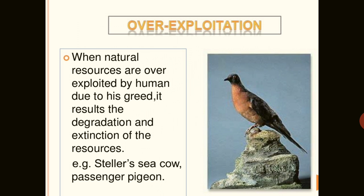The second reason is over-exploitation. Our natural resources are over-exploited by human activity driven by greed, resulting in the degradation and extinction of resources. Examples include Steller's sea cow, found in Russia, and the passenger pigeon — a very important bird that used to pass messages from one place to another — which was lost due to over-exploitation of natural resources.